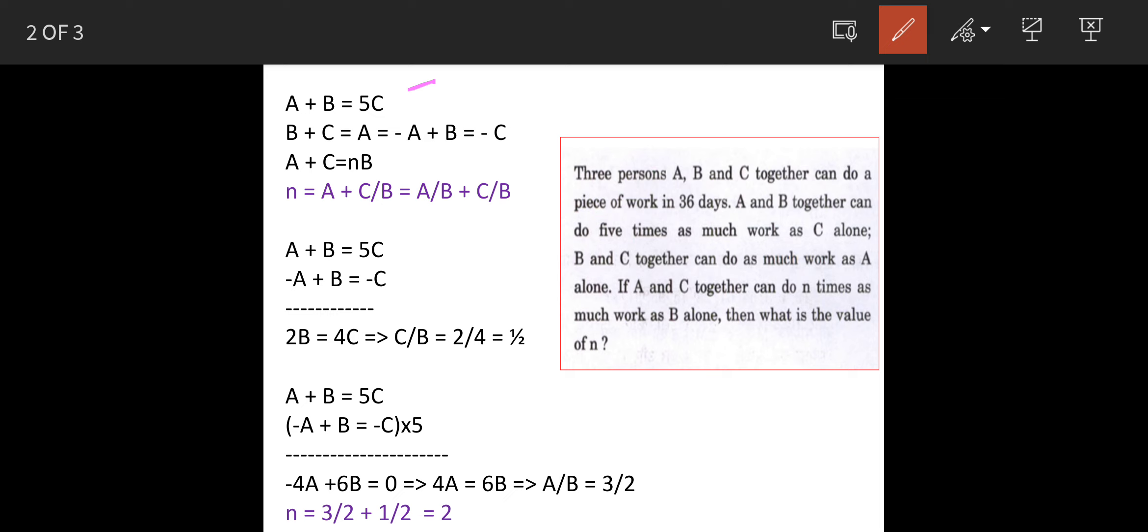Now B plus C, their work equals what A is doing. So B plus C is equal to A. We'll write this in the form of A and B. So it becomes minus A plus B is equal to minus C.